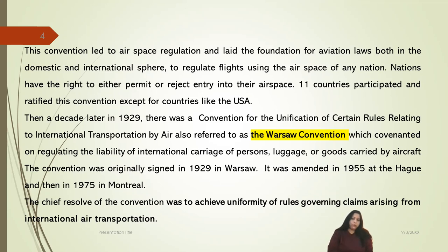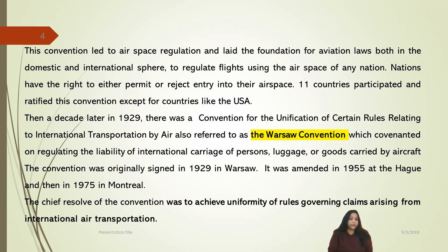There were 11 countries that participated in and ratified the Paris Convention, except for countries like the USA. Then a decade later, in 1929, there was the Convention for the Unification of Certain Rules Relating to International Transportation by Air, also referred to as the Warsaw Convention. This laid down covenants on regulating the liability for international carriage of persons, luggage, or goods carried by aircraft. It was originally signed in 1929 in Warsaw, amended in 1955 at the Hague, and again at the 1975 Convention in Montreal. The chief resolve was to achieve uniformity of rules governing claims arising from international air transportation.